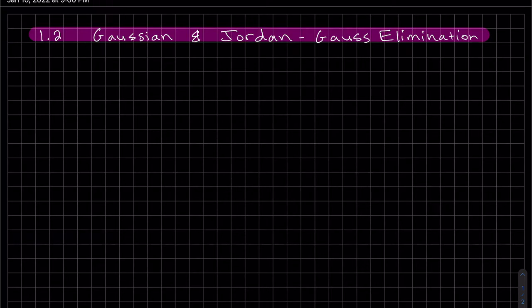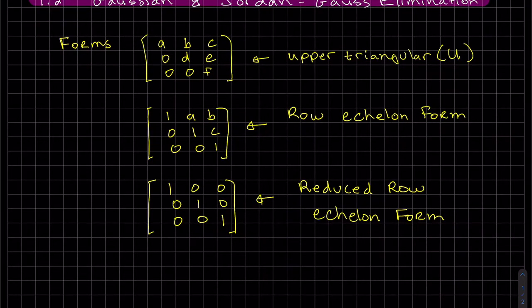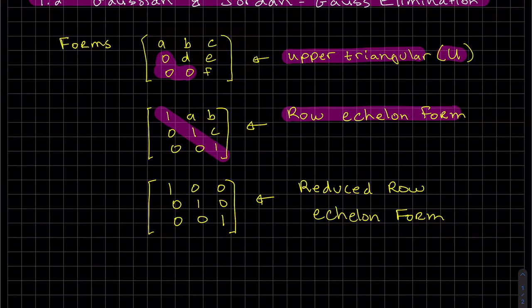This is 1.2 Gaussian elimination and also Jordan-Gauss elimination. Pretty self-explanatory. You have the zeros down here, so that's an upper triangular, we call that the U matrix. A row echelon form is an upper triangular but with ones in the diagonal. And a reduced row echelon form is zeros everywhere except for the diagonal.